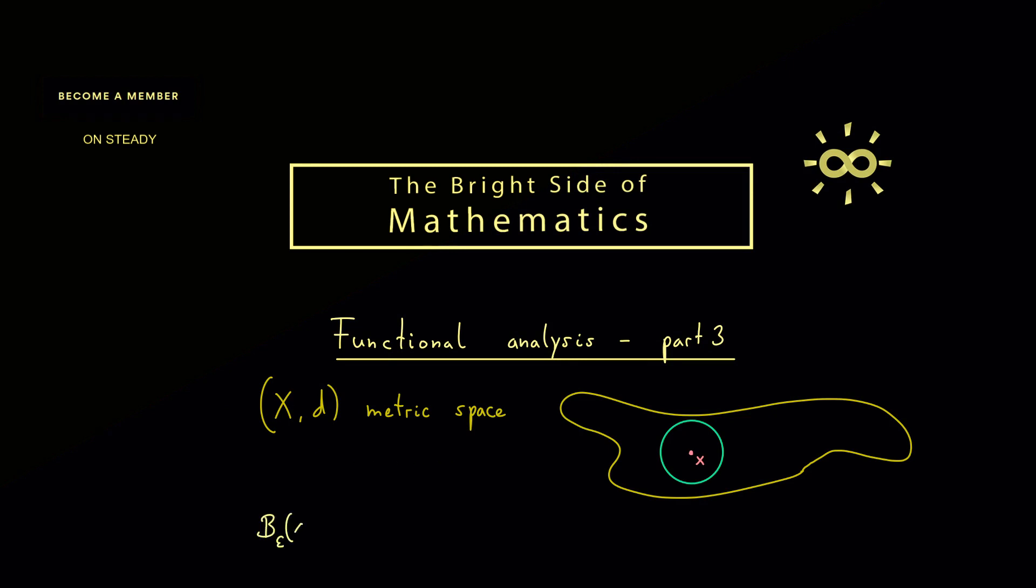Exactly this notion of a ball is what we want to generalize for an abstract metric space. We write B_ε(x) and call it the open epsilon ball around x. It is defined as all the points y in our metric space X that fulfill that the distance from x to y is less than a given radius epsilon. However this means that in the picture it's not the red line, it's everything inside.